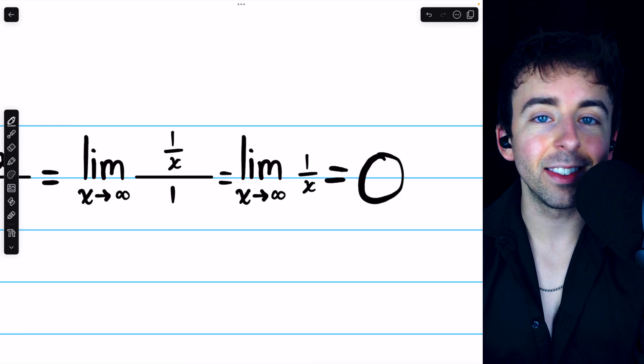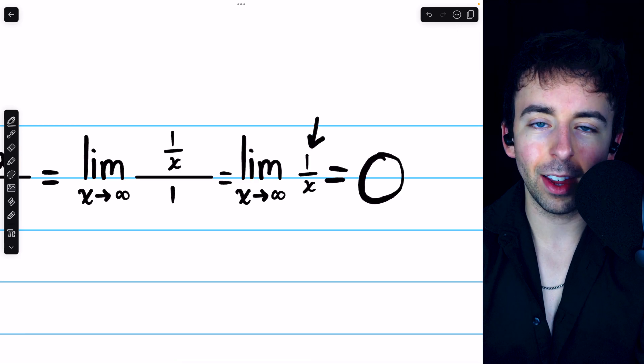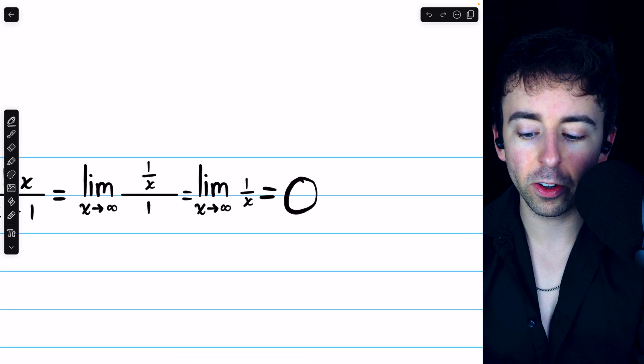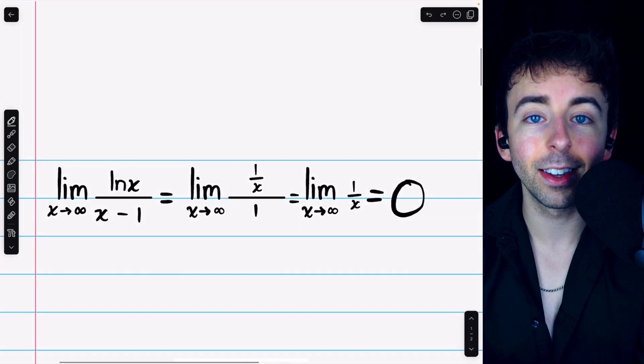And clearly, this is 0, because the numerator is a fixed, finite number, while the denominator is getting arbitrarily large. And so, the original limit is 0.